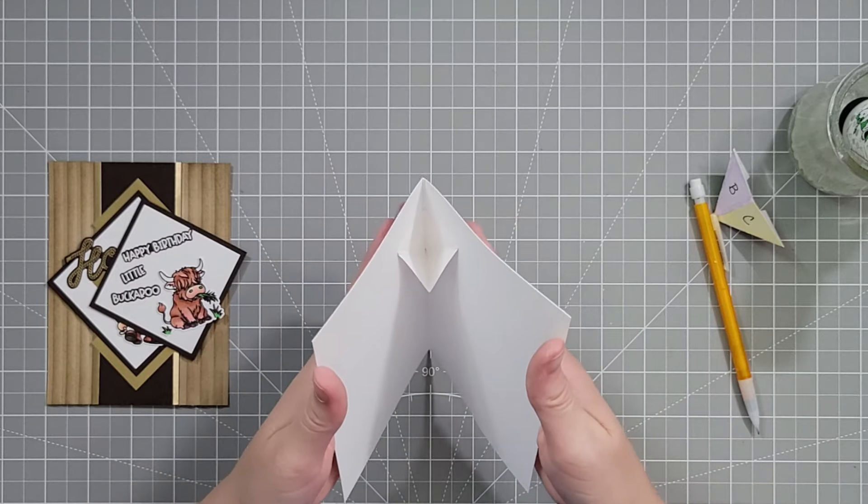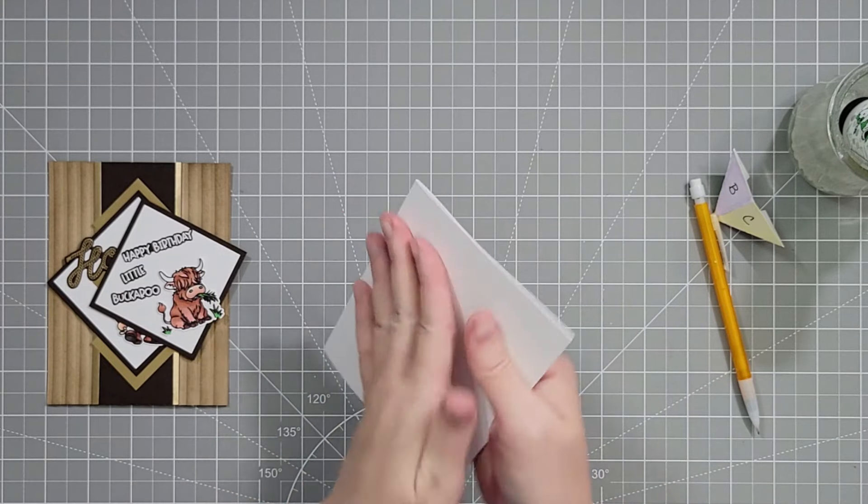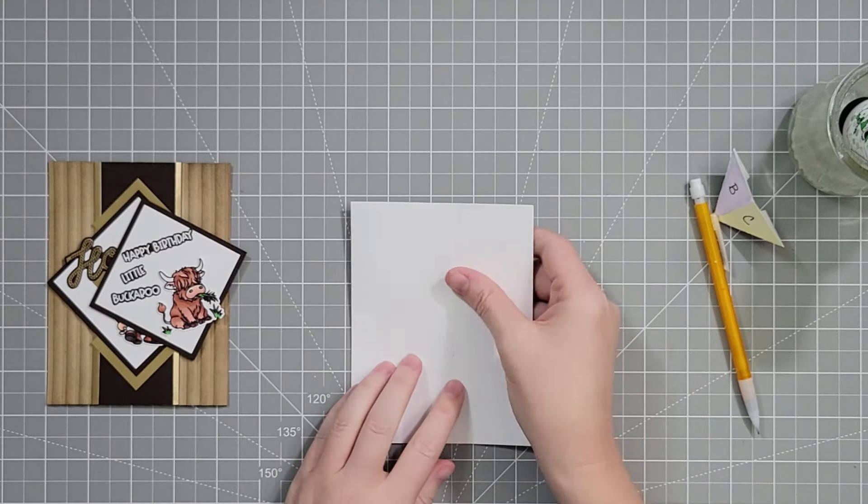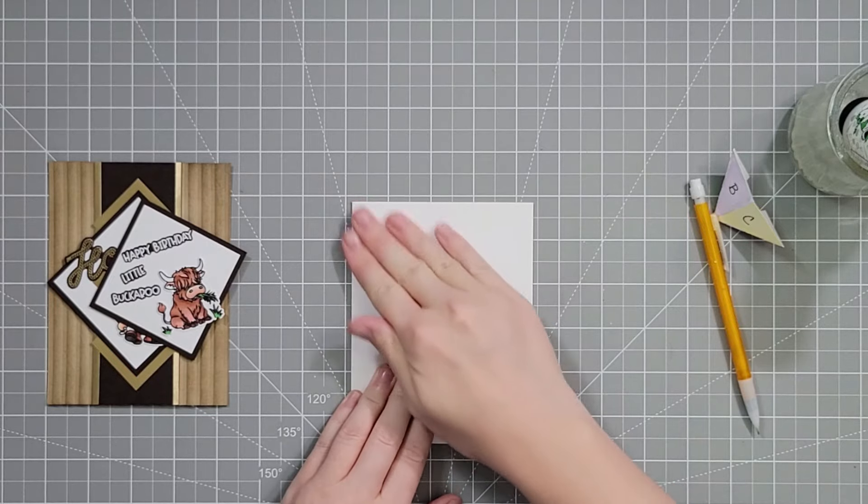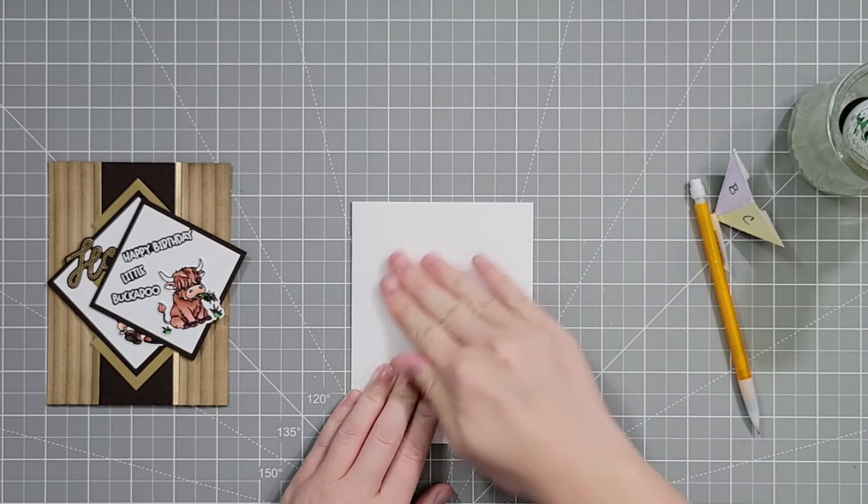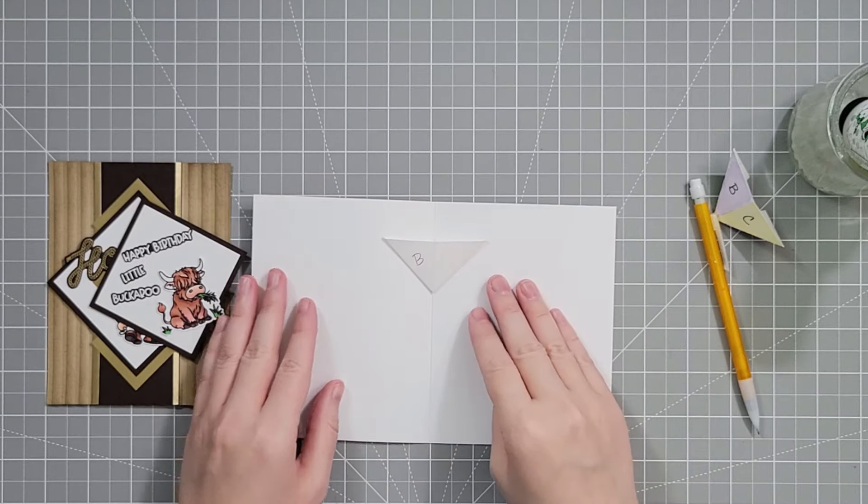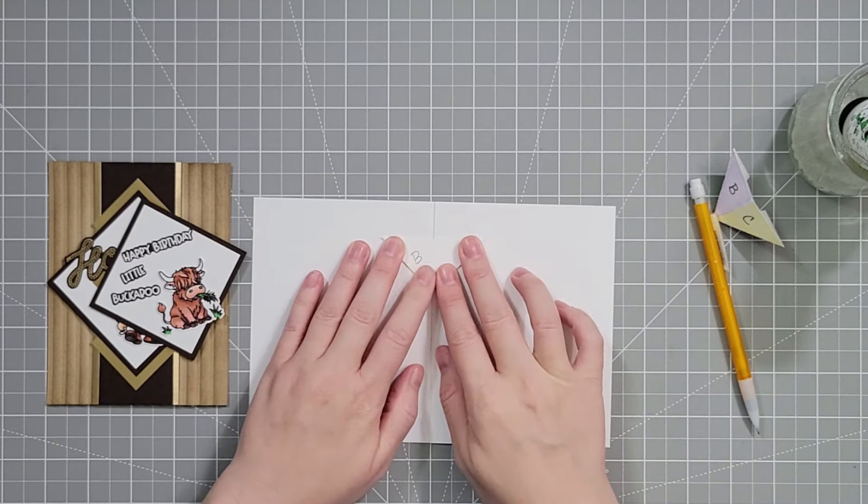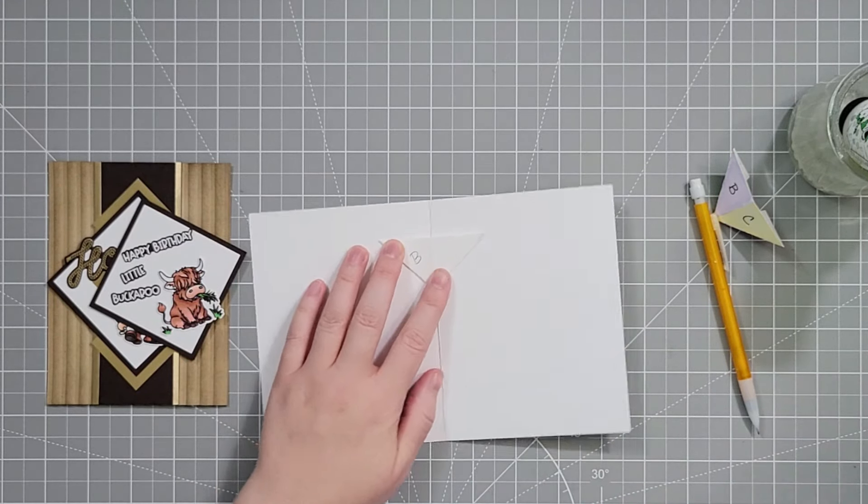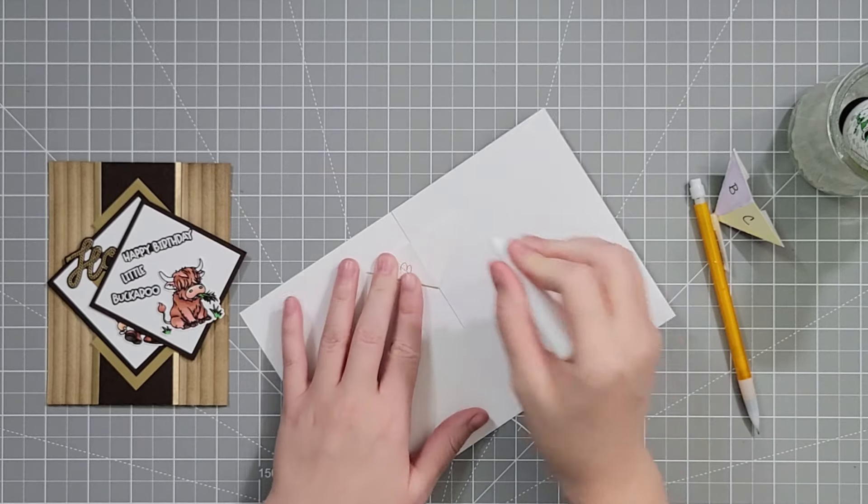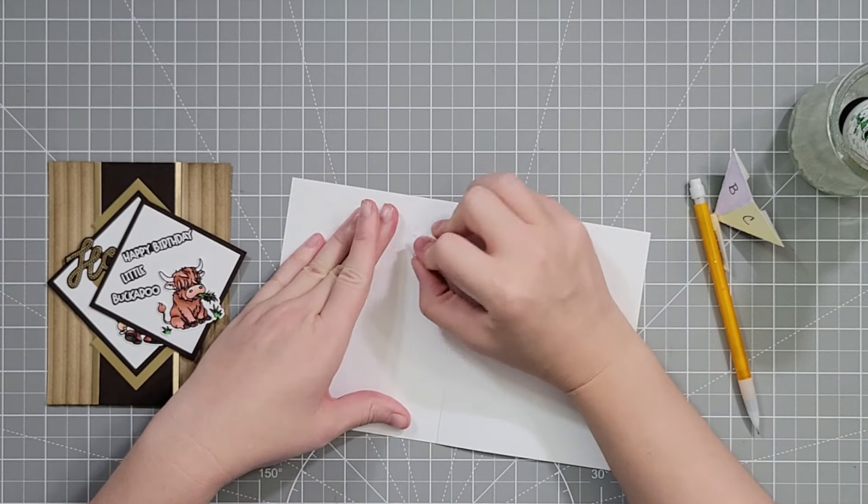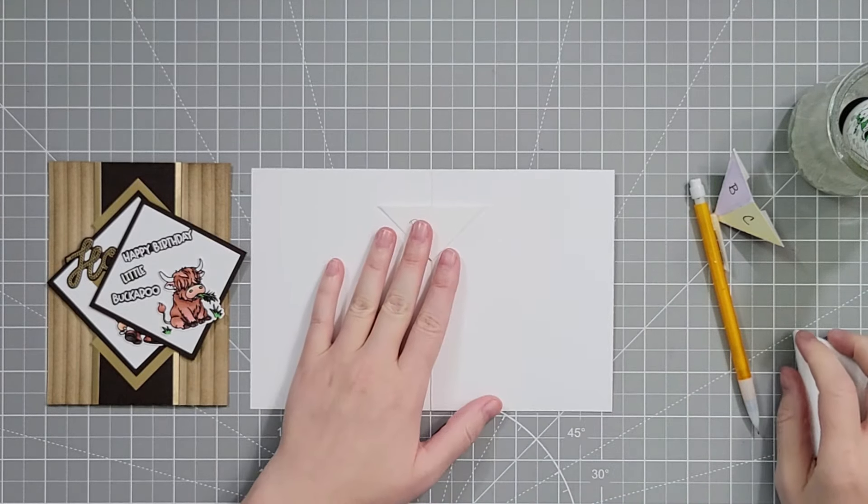While the glue is wet I'm slowly closing my card and seeing if the mechanism moves. If it moves or it buckles or it bends, it means I'm not lined up in the center. Sometimes it will adjust itself, but mine was perfect this time. I think I've been installing a lot of pop-ups. I'm going to carefully open it back up and then I like to take my bone folder and just burnish those a little bit.